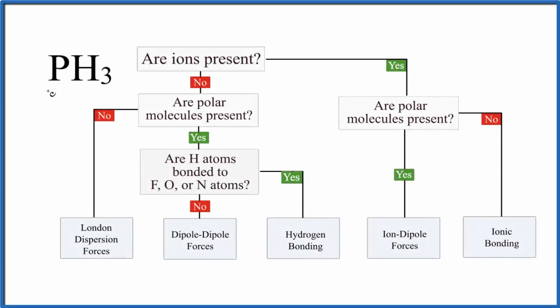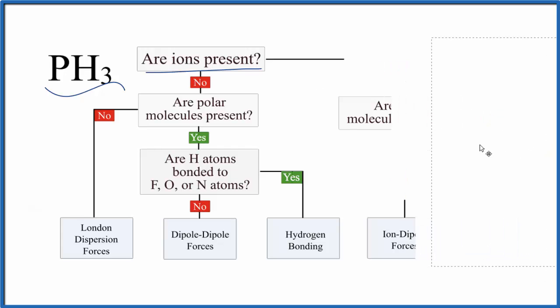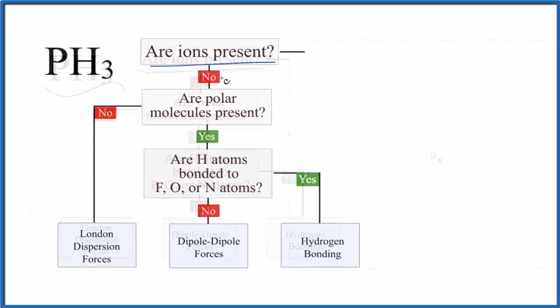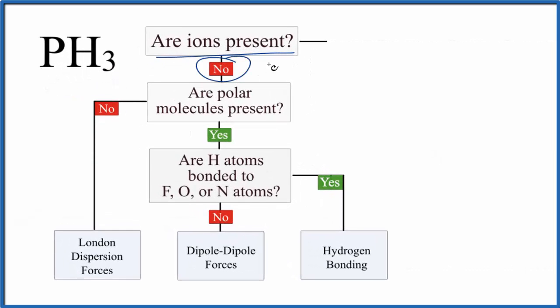Let's take a look at the intermolecular forces for PH₃. First off, when we look at PH₃, we don't have any ions present. That's because we have a non-metal and a non-metal here. This is a covalent compound, so we don't have any ions present.